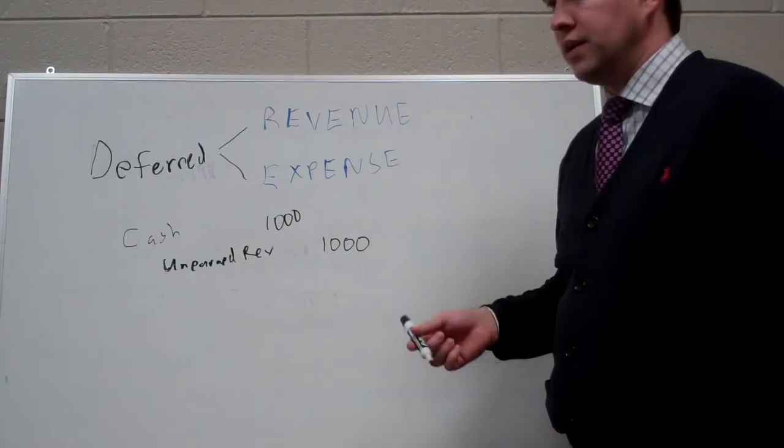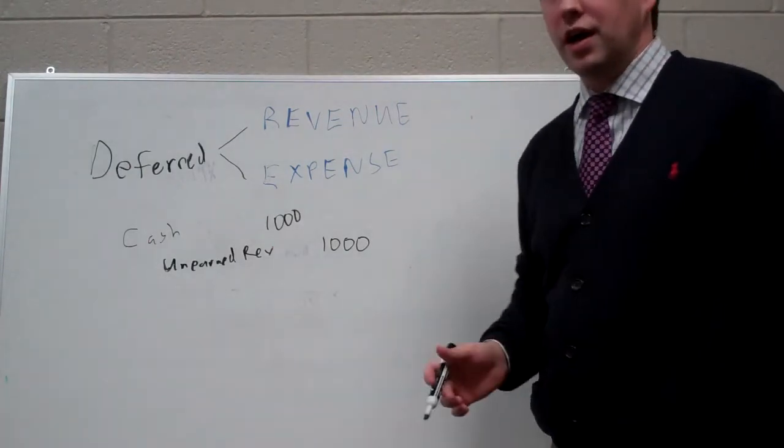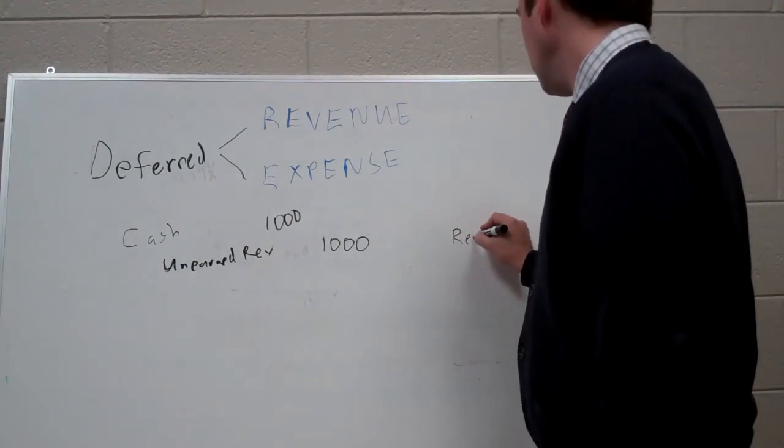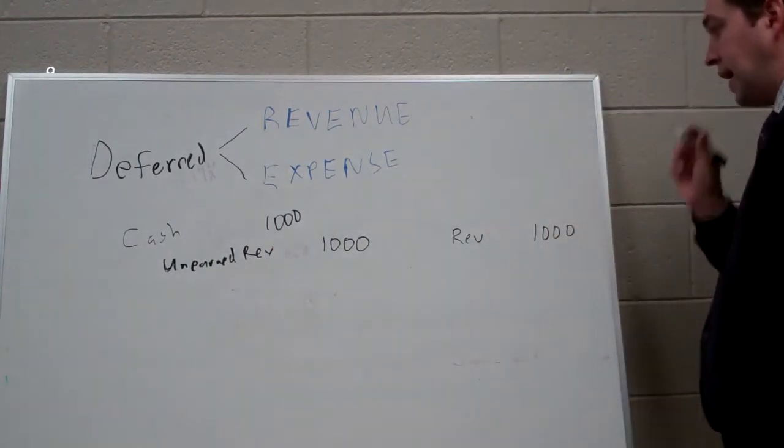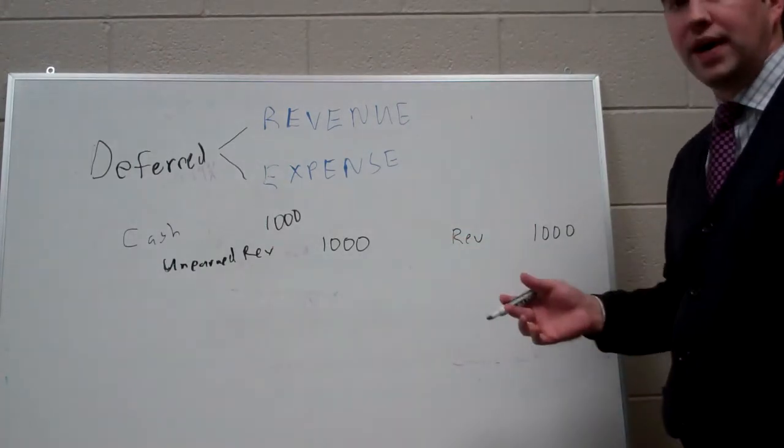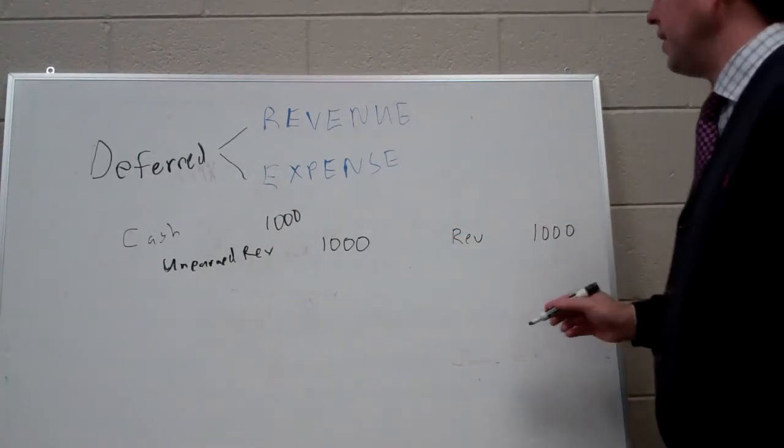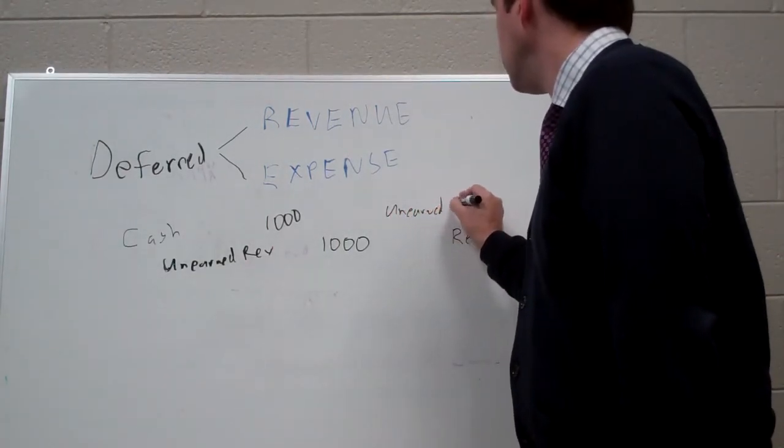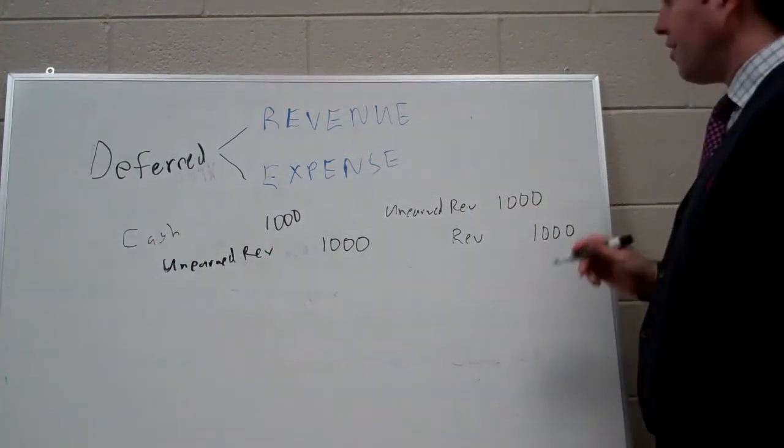Now, next week comes along and we do the job. When we've done the job, we've earned the revenue. So now we can credit revenue for $1,000. And this liability, we've satisfied it. We've done what we were supposed to do, so now it can go away. We debit unearned revenue for $1,000 to take it off the books.